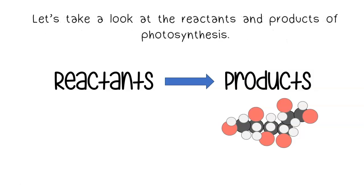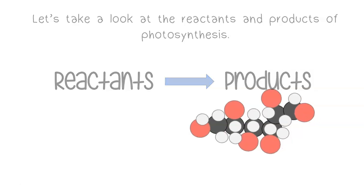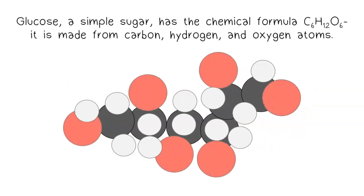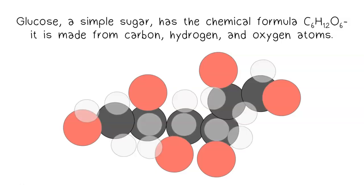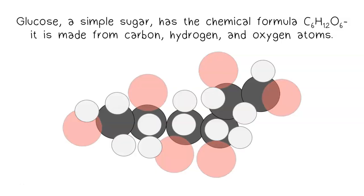Let's take a look at the reactants and products of photosynthesis. Glucose, a simple sugar, has the chemical formula C6H12O6. It is made from carbon, hydrogen, and oxygen atoms.